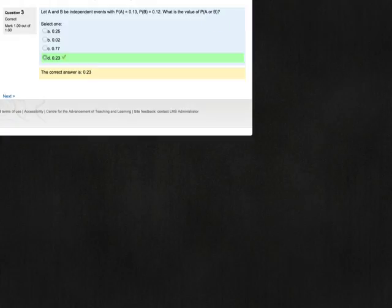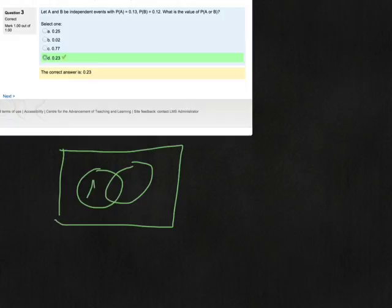So let's just draw out in a Venn diagram what that means. So we've got A, we've got B, and we want, pick another color here for a second, we want this value here, the probability of all of them.